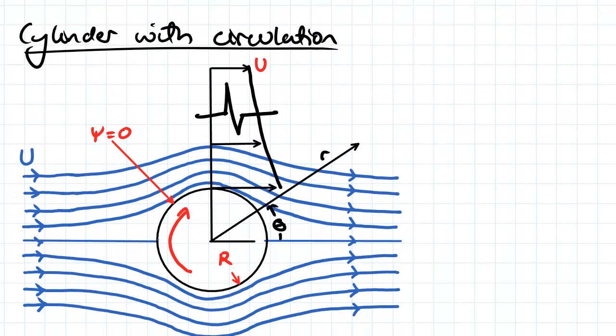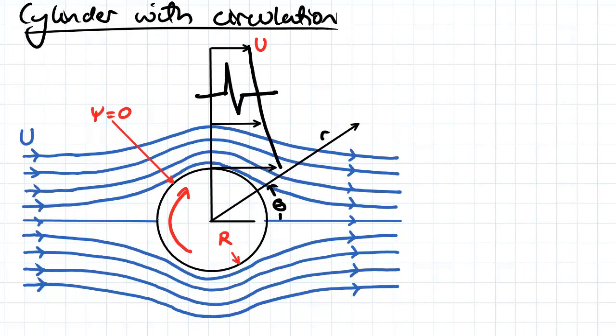So here we have a diagram of our flow here. It looks very similar to the flow over a cylinder. Obviously, the only difference is this cylinder now has some angular velocity.